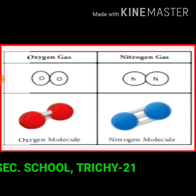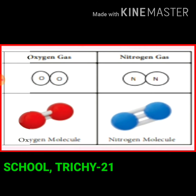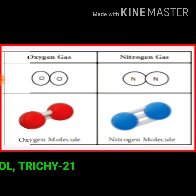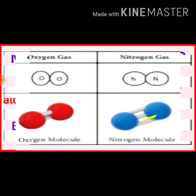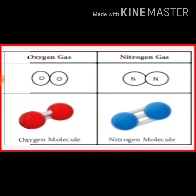The table shows the ball-stick model of oxygen gas and nitrogen gas. In an oxygen molecule, two oxygen atoms are doubly bonded to produce an oxygen molecule. In a nitrogen gas molecule, two nitrogen atoms are triply bonded to produce a nitrogen molecule.